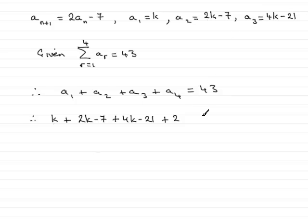That's going to be twice 4k minus 21, and then we have to subtract 7. So this part here is the fourth term in the sequence and all of this lot equals 43.